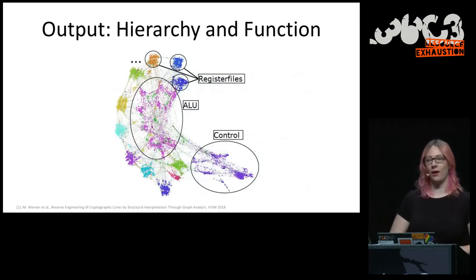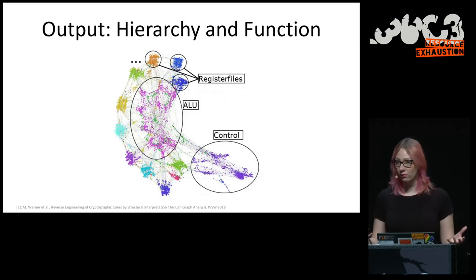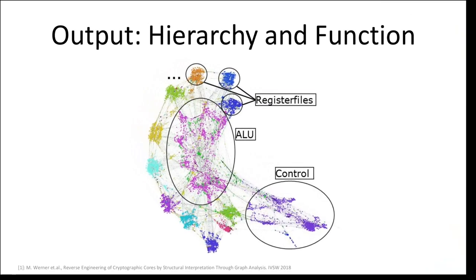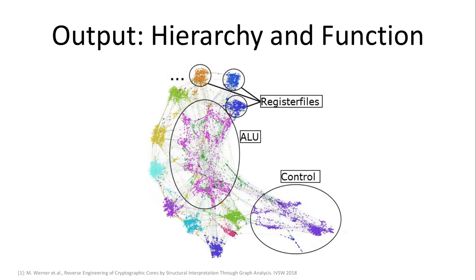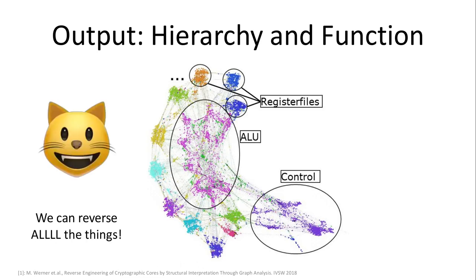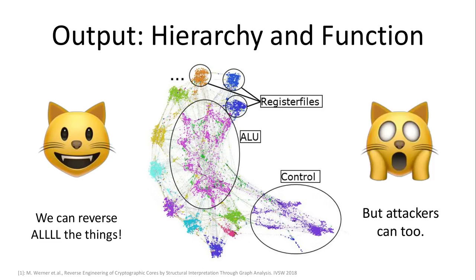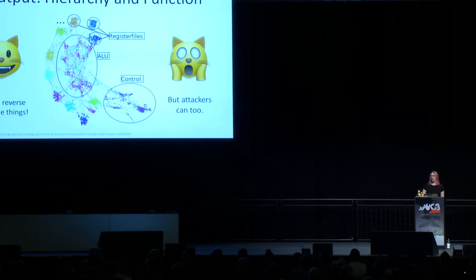So we have some kind of output hopefully — we have some kind of hierarchy, we figured out our modules, and we've figured out what they do. We can reverse engineer all the things. But attackers can do it too — they might be able to put hardware in there, steal IP. We care more about the hardware trojans. So there are a couple of countermeasures people have thought about: logic locking, split manufacturing, and camouflaging. Spoiler: they're all pretty broken.